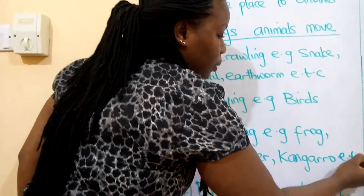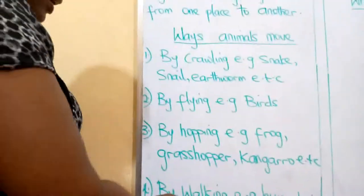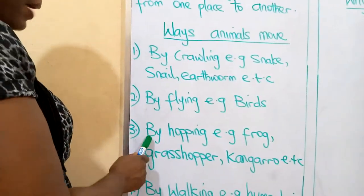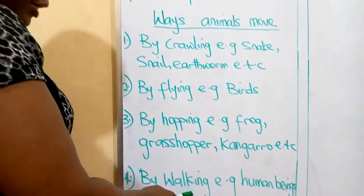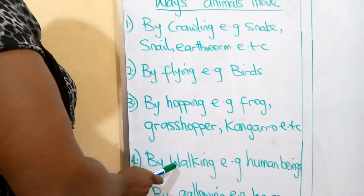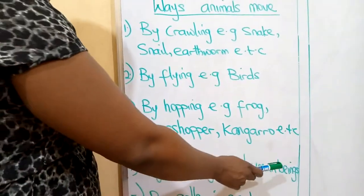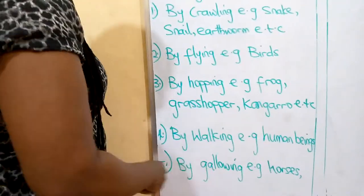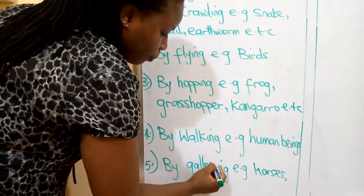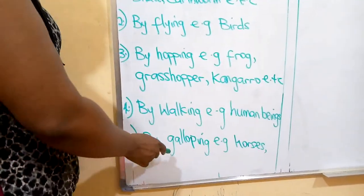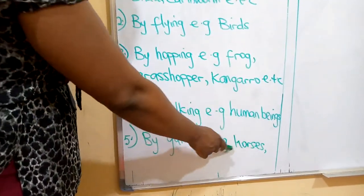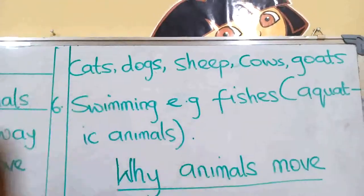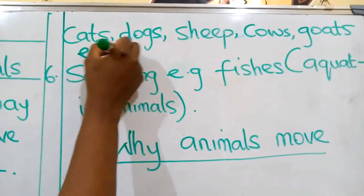Number four: by walking. Example of animals that move by walking is human beings — you and I. We move by walking. Number five: by galloping. That is another way animals move. Examples are your horses, your cats, your dogs, the sheep, your cow, your goat, and so many other animals.